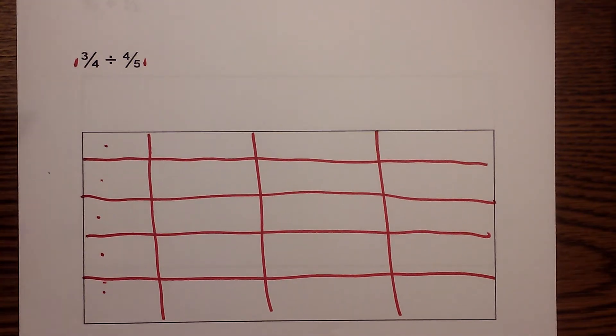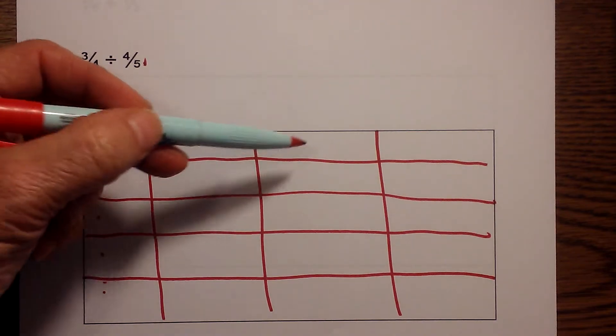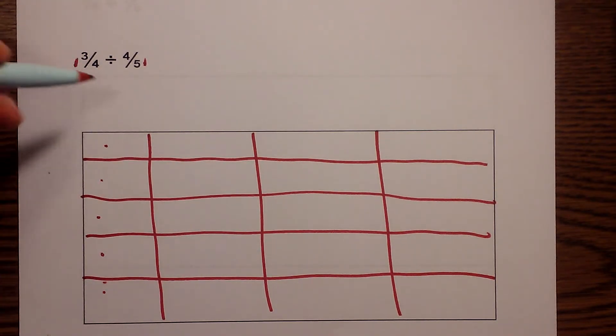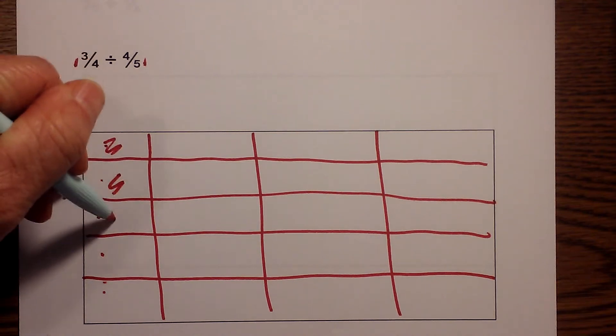Now all I need to do is the dividend will tell me the number of vertical columns I have. And since I have 3 out of the 4 I will shade this in.